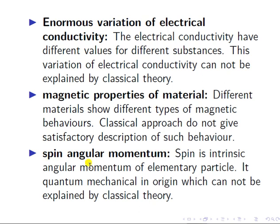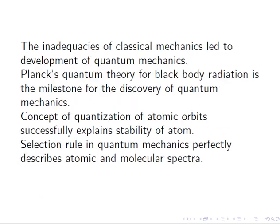Another inadequacy is spin angular momentum. Spin is considered one of the intrinsic angular momenta and is an important parameter for any elementary particle. Spin angular momentum is quantum mechanical in origin — in classical theory there is no such thing as spin angular momentum. Therefore, if we need to describe elementary particles, we must have spin angular momentum, and we need quantum mechanics to explain it.